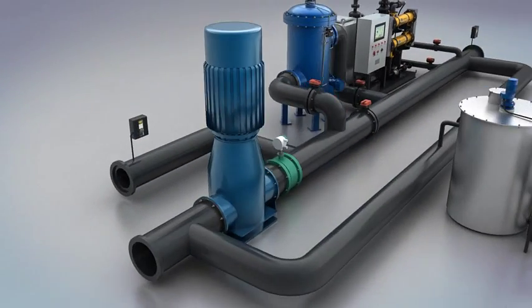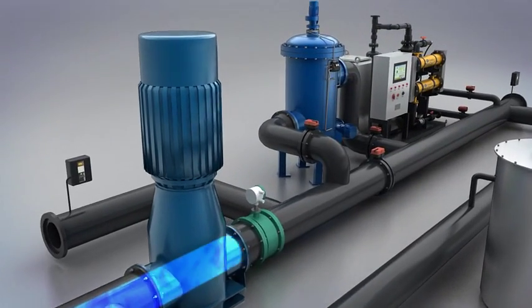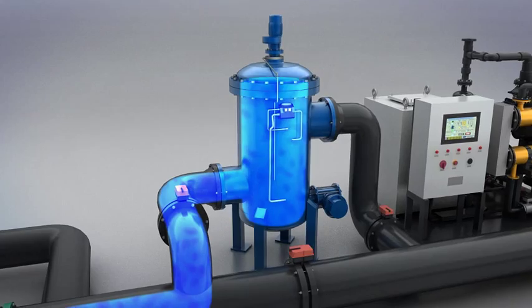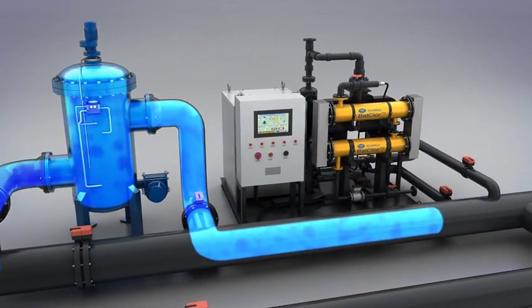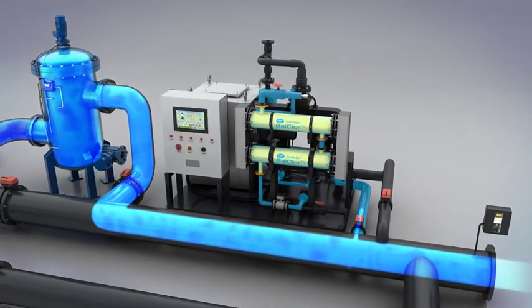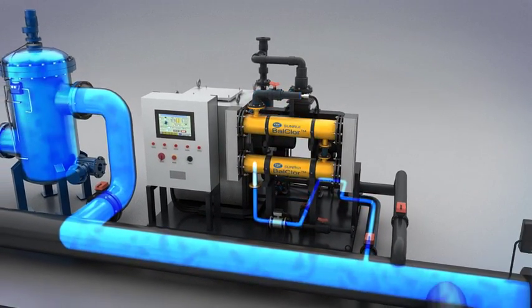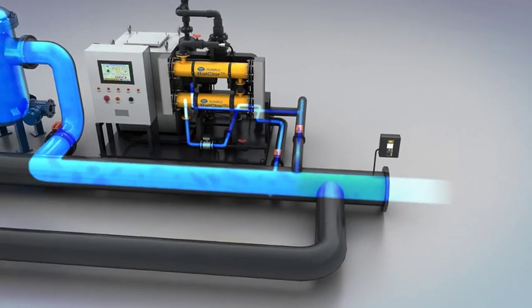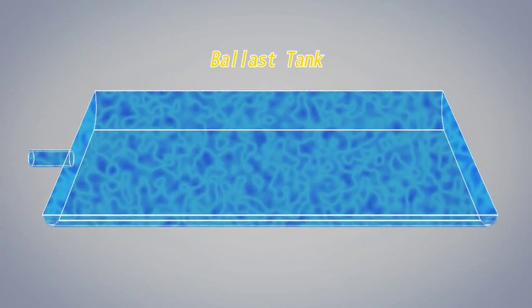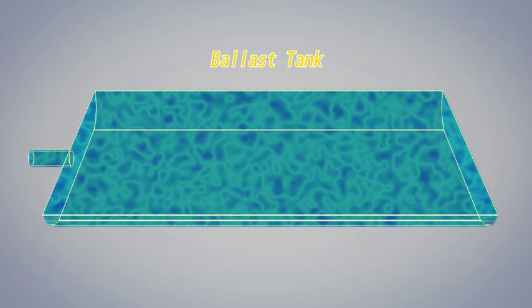During ballasting, ballast water is filtrated by an automatic back flushing filter. Marine organisms larger than 50 micrometers will be removed during this process. Then, a side stream of filtered ballast water flows to electrolyzing unit to generate high concentrated oxidant, mainly sodium hypochlorite solution, which will be injected back into main ballast stream to provide effective disinfection to meet D2 discharge standard.